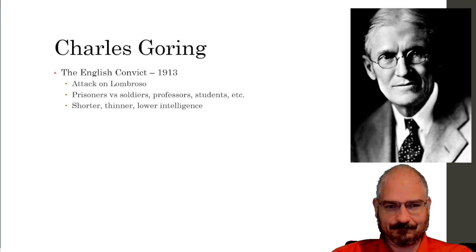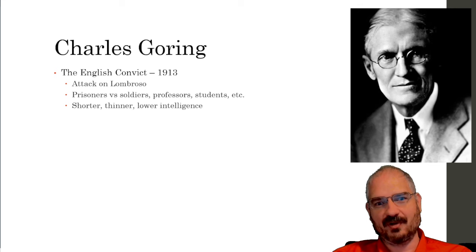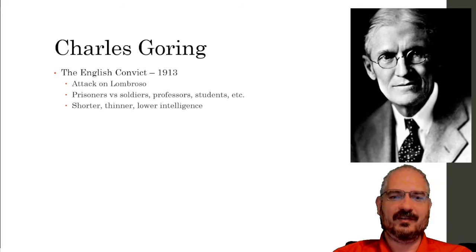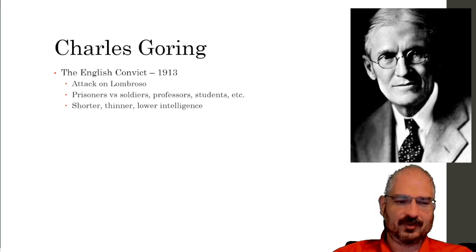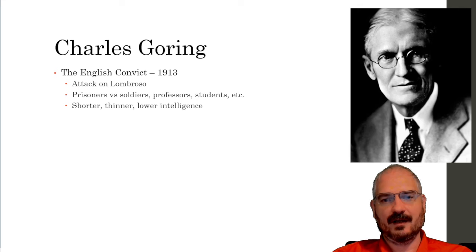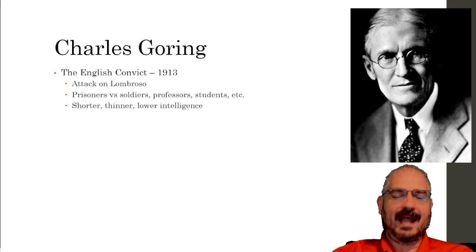Then along came an English guy named Goring who also studied prisoners and compared them to non-prisoners, but this time instead of soldiers he compared them to soldiers, professors, students, and a bunch of other groups that are seen as more socially acceptable compared to these prisoners. This was in general viewed as an attack on Lombroso, pointing out how Lombroso was wrong about which stigmata he identified. But he came to the same basic conclusion that there was this biological deterministic nature of criminality, and there are some people who are just biologically inferior unlike him and people like him who are clearly biologically superior.